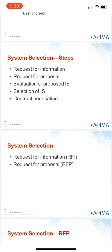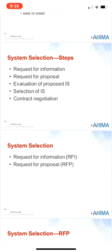The healthcare facility must identify what they demand from an information system, such as specific functions and compatibility with existing information systems. There are a number of steps in the system selection process: number one, a request for information and a request for proposal; two, evaluation of the proposed information system; three, selection of an information system; and four, contract negotiation.